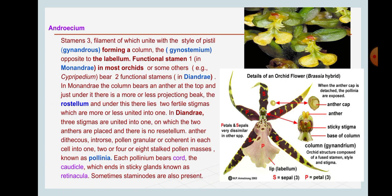Androecium: Stamens three, filaments of which unite with the style and stigma to form the gynosium (column). The gynosium is opposite to the labellum. Functional stamen: In most orchids, one; in some others, two functional stamens. In monandrous orchids, the column bears the anther at the top and just under it the more or less projecting rostellum, and under this lie two fertile stigmas, mostly united into one.